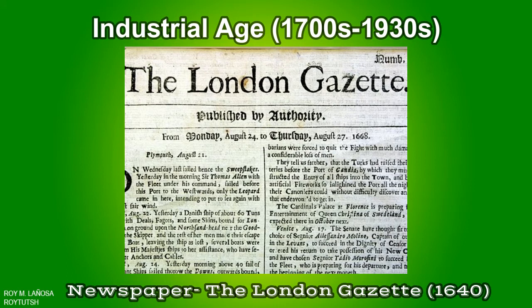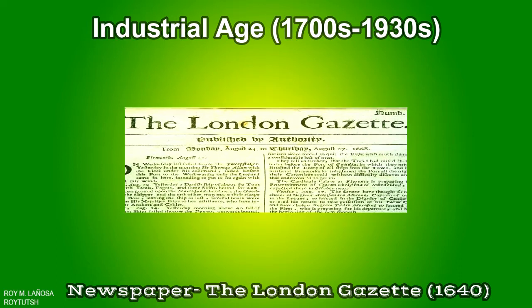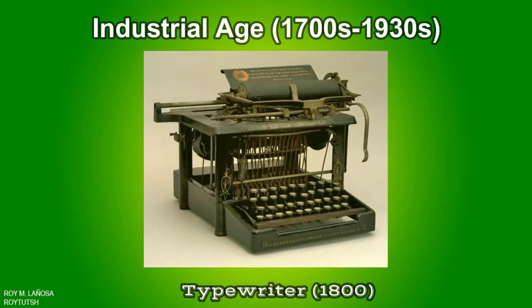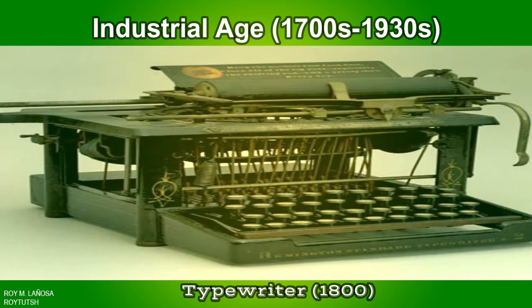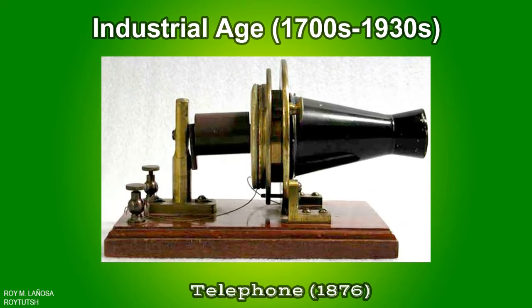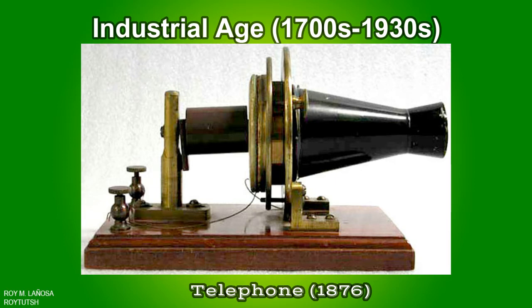The London Gazette is the most important among official journals in the United Kingdom, in which certain statutory notices are required to be published. The typewriter is a mechanical or electromechanical machine for typing characters similar to those produced by a printer's movable type; typically a typewriter has an array of keys, each one causing a different single character to be produced on paper. The telephone is a telecommunication device that permits two or more users to conduct a conversation when they are too far apart to be heard directly. A telephone converts sound — typically the human voice — into electronic signals transmitted via cables and other communication channels to another telephone, which reproduces the sound for the receiving user.